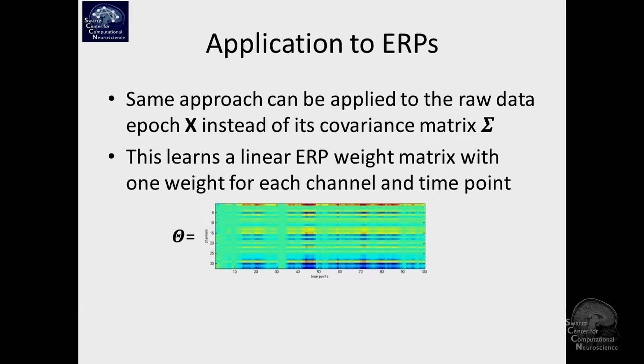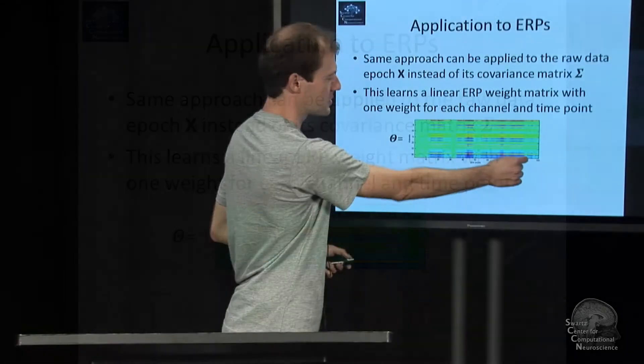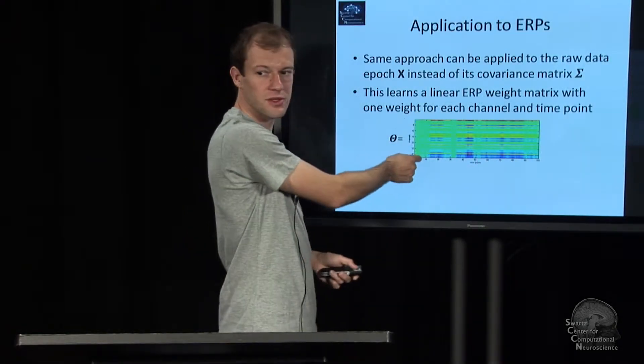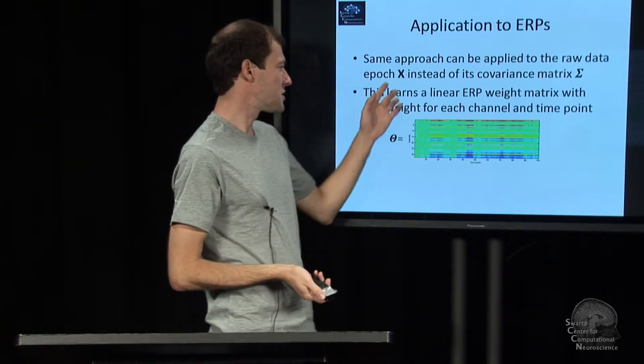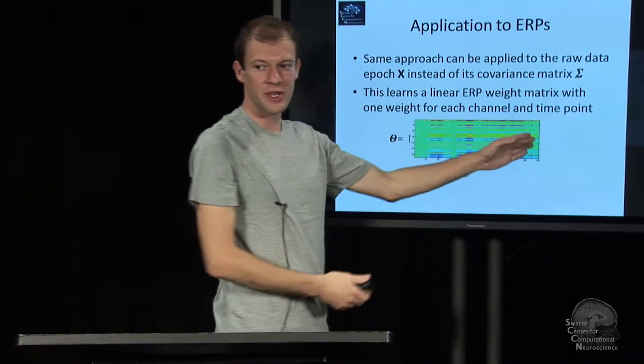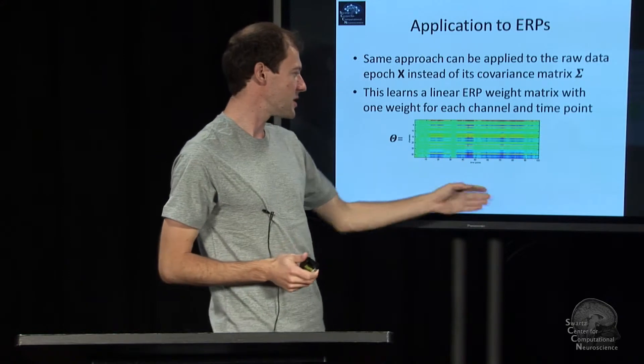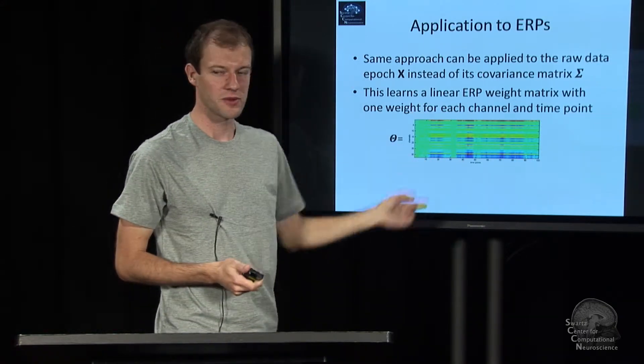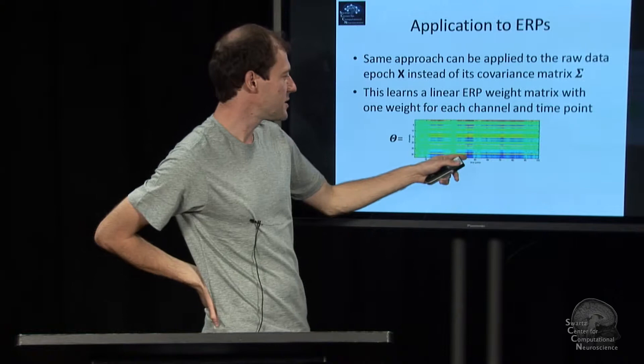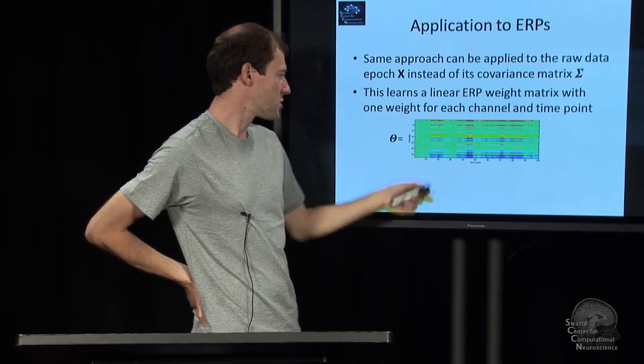It's just that now the weight matrix assigns weights to time points and to channels, because that's the same form of the data that we put in. One trial's a matrix, and we take the inner product between that matrix and the weight matrix. So we assign a weight to certain time points and certain channels.